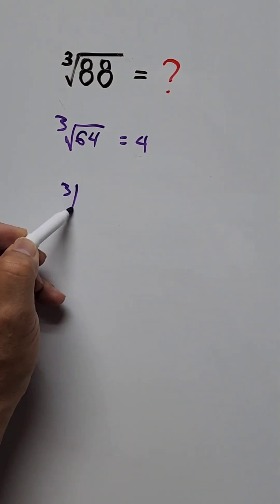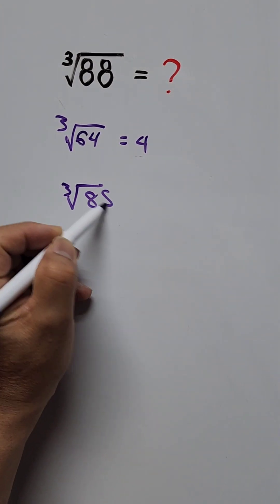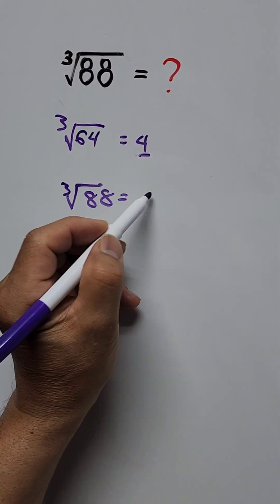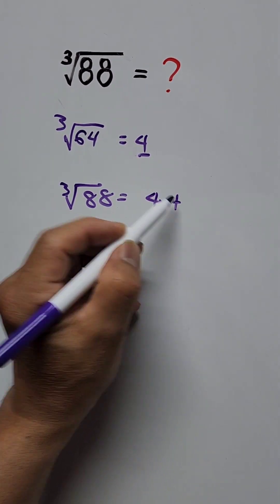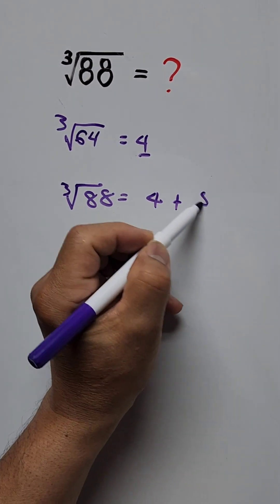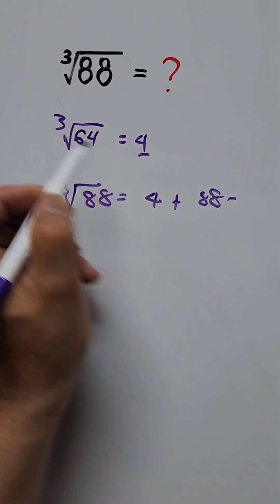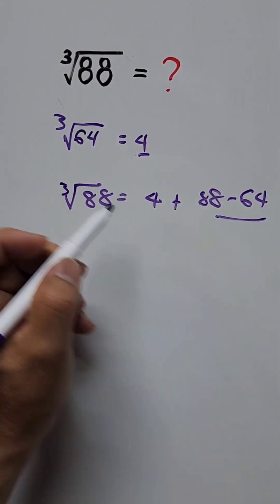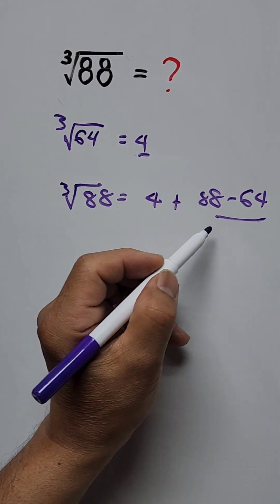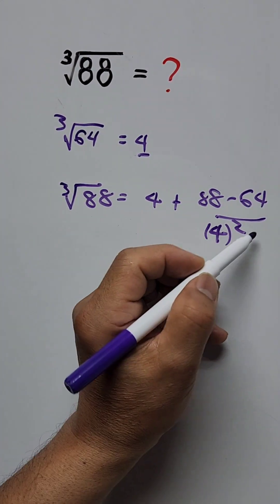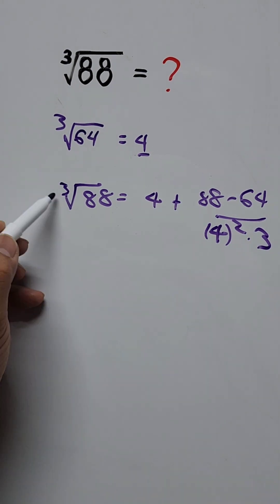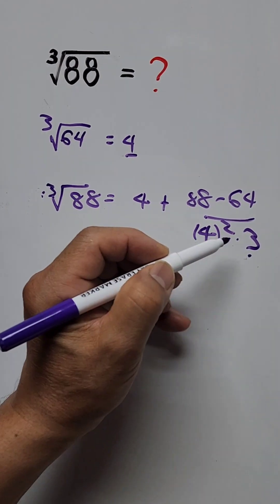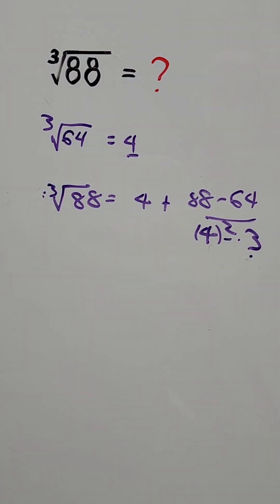So the cube root of 88 equals the base number, which is 4, plus the difference of these two numbers — 88 minus 64 — divided by the base number squared times 3, because there's a cube root and the exponent 2 is always exponent 2.